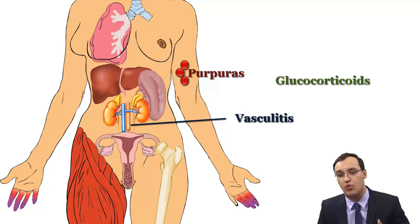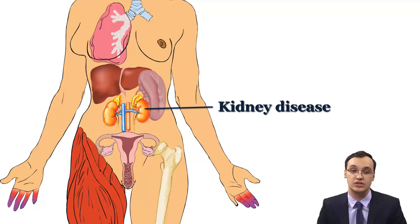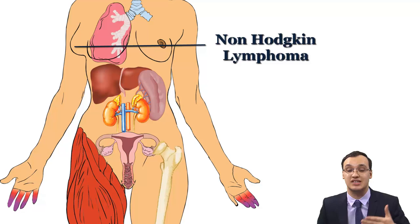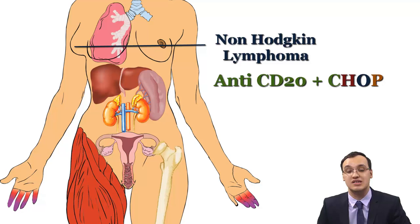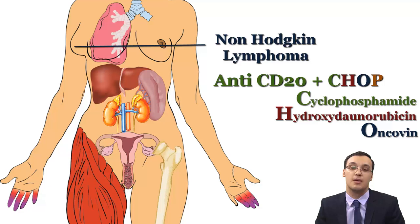Kidney diseases such as interstitial nephritis, kidney stones, impaired concentrating ability, or renal tubular acidosis may occur; bicarbonate replacement therapy can be used for renal tubular acidosis. Chronic hepatobiliary disease may also be present. The risk of non-Hodgkin lymphomas is 40 times higher, treated with anti-CD20 therapy together with the CHOP regimen — cyclophosphamide, hydroxydaunorubicin, vincristine (Oncovin), and prednisolone. Rarely, splenomegaly or myositis may be seen.